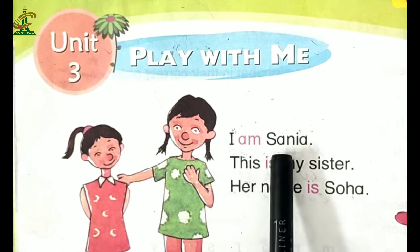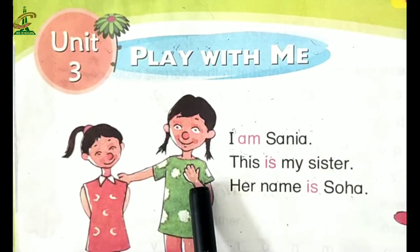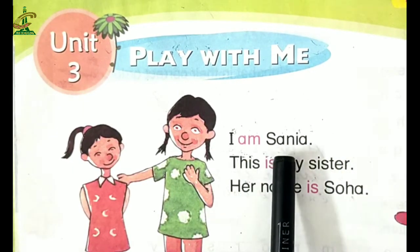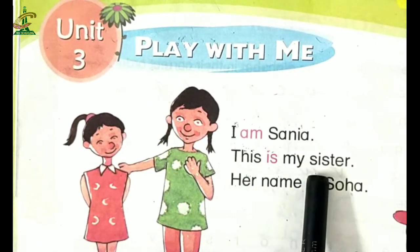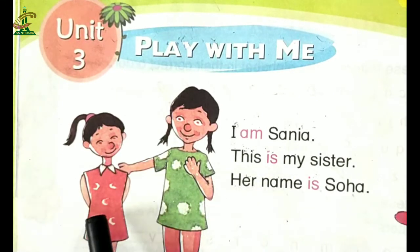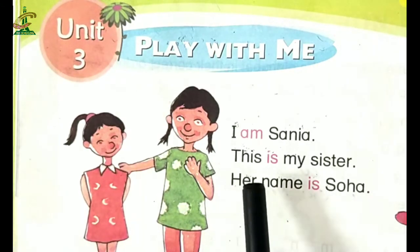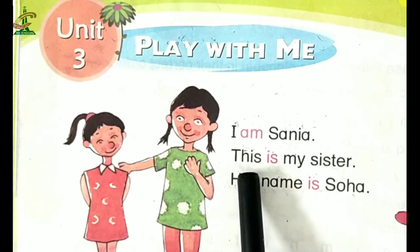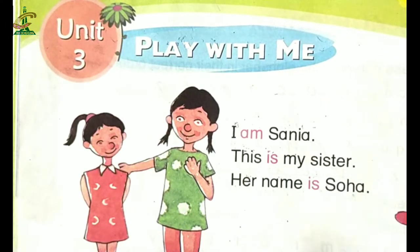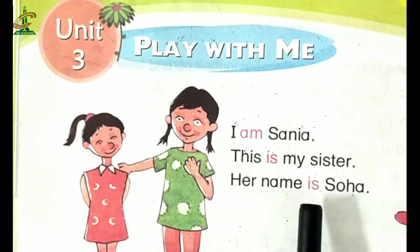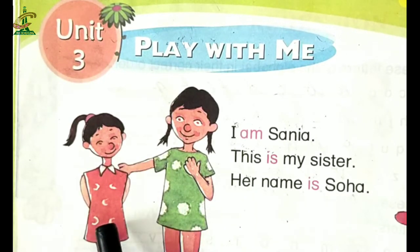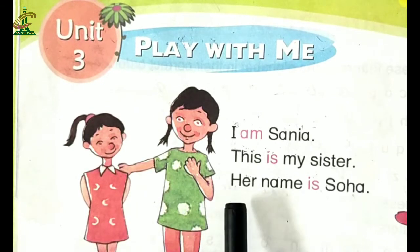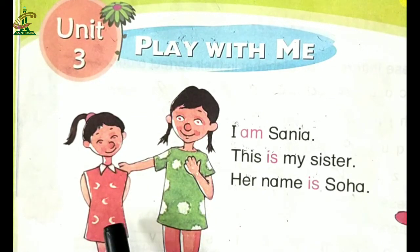I am Sania. یہ کیا کہہ رہی ہیں؟ I am Sania. This is my sister. اب یہ کیا بتا رہی ہیں Sania؟ This is my sister. Read with me again: This is my sister. Her name is Soha. اور یہ کہہ رہی ہیں: Her name is Soha. ان کا کیا نام ہے؟ Soha.